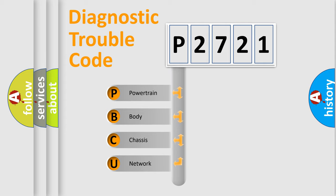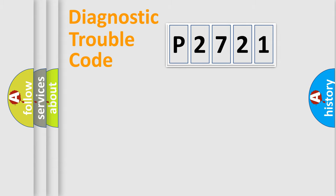We divide the electric system of automobile into four basic units: powertrain, body, chassis, and network. This distribution is defined in the first character code.